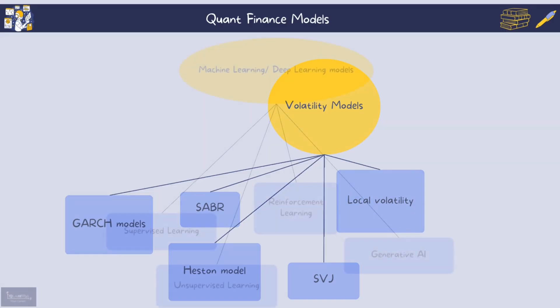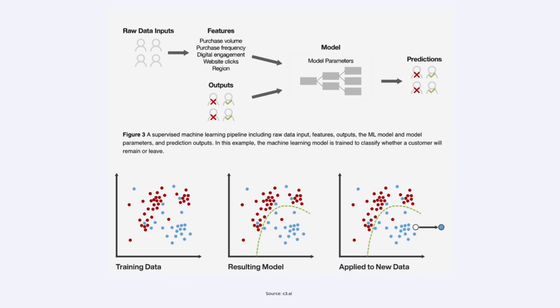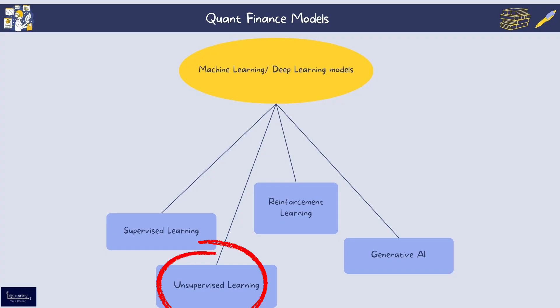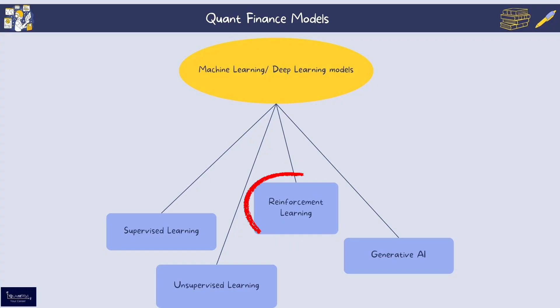Machine learning, deep learning, and AI models can be subdivided into several categories. Supervised learning involves training algorithms on labeled datasets to predict outcomes — for example, credit scoring or fraud detection — and is widely used in finance for risk assessment and algorithmic trading strategies. Unsupervised learning deals with unlabeled data, aiming to uncover hidden patterns or groupings. Techniques like clustering and dimensionality reduction are applied in customer segmentation and anomaly detection.